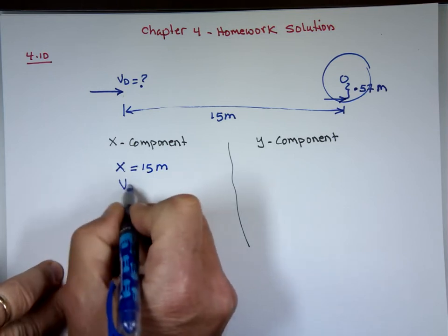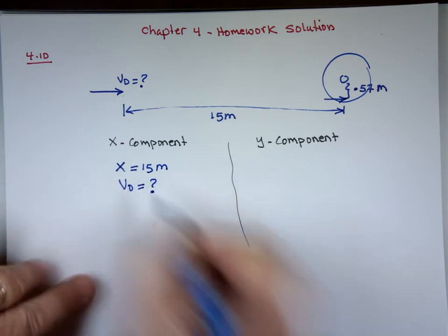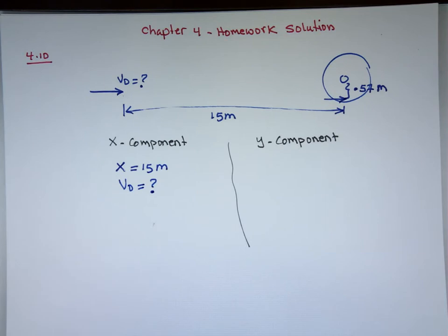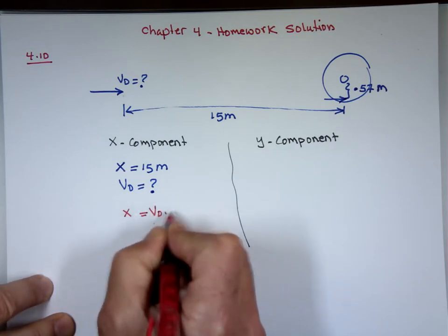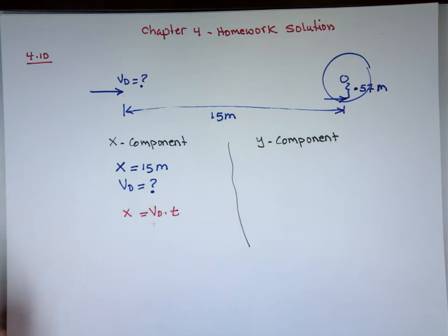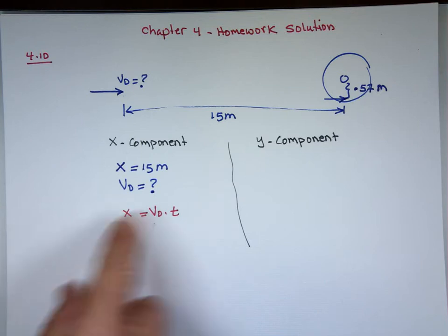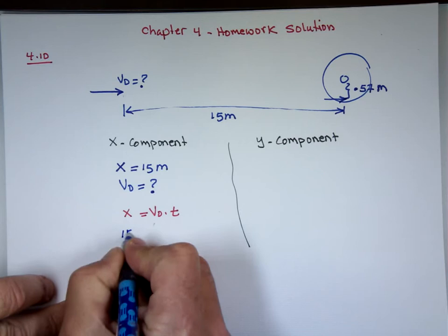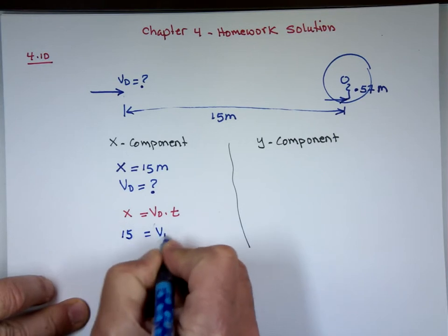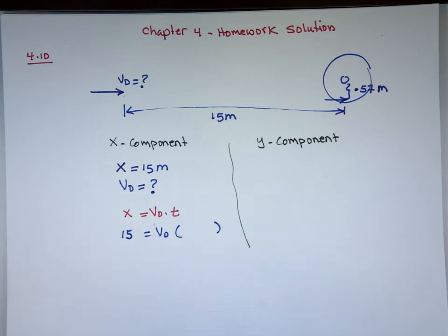The initial velocity v₀ is unknown — that's what we're looking for. There's only one equation in the x-direction: x = v₀t. If we know x and t, we can find v₀. We have x, but we don't have t, so we need to find t first.